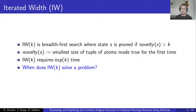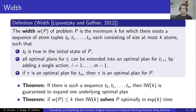The question is: when does IW(k) solve a problem? Underlying the IW algorithm is the notion of width. The width W(p) of a problem p is the minimum k for which there exists a sequence of atom tuples t0 through tm, each consisting of at most k atoms, such that three conditions are satisfied. The first is a base case: tuple t0 is true in the initial state of p. The second is the inductive case: all optimal plans for tuple t_i can be extended into an optimal plan for tuple t_{i+1} by adding a single action, for all i from 1 to m-1. The third condition states that the last tuple in the chain implies the goal of the problem.